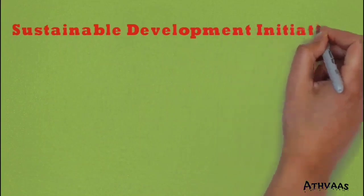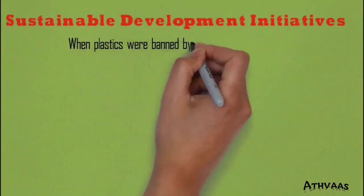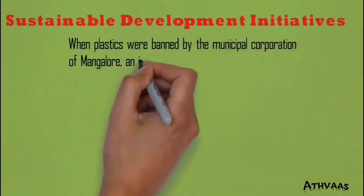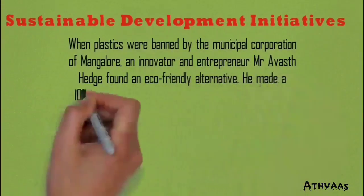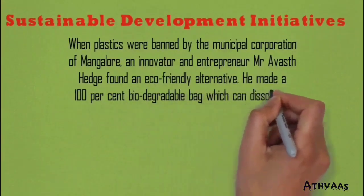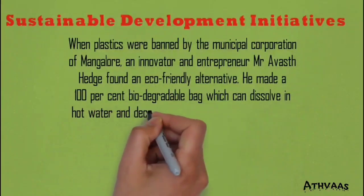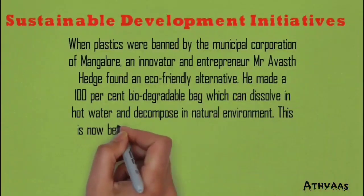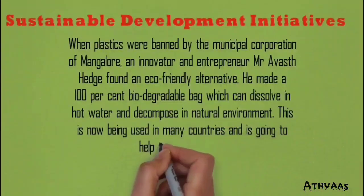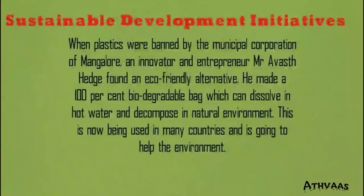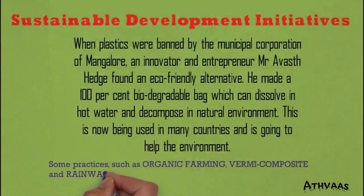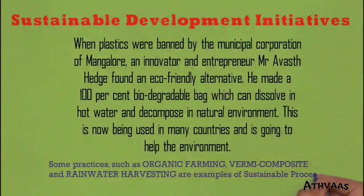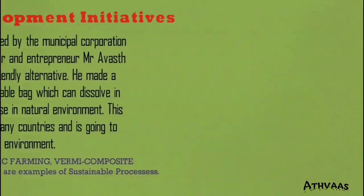As an example of a sustainable development initiative, Mr. Awest Hedge, an innovator and entrepreneur who works for the environment, made 100% biodegradable bags which can be dissolved in hot water and decompose in the natural environment. As plastic bags were banned by the government, practices like organic farming, vermicomposting, and rainwater harvesting are also examples of sustainable processes.